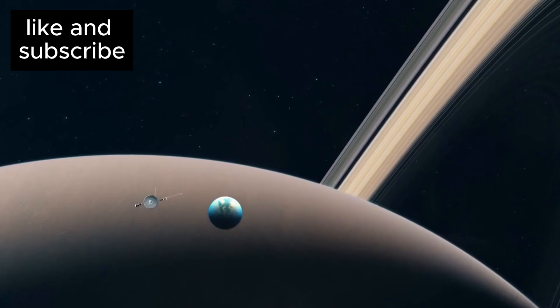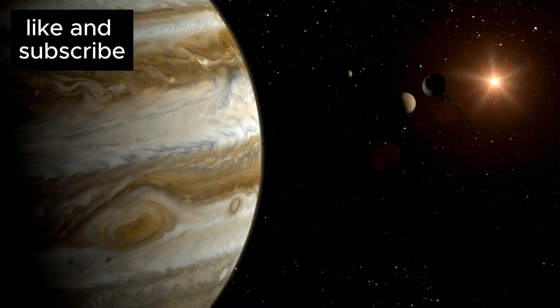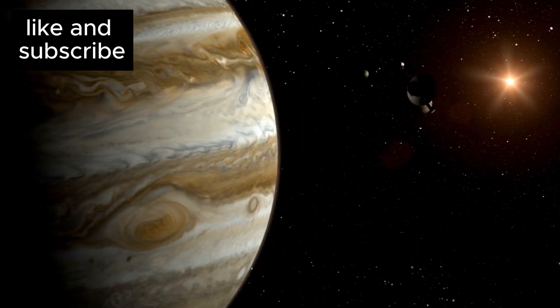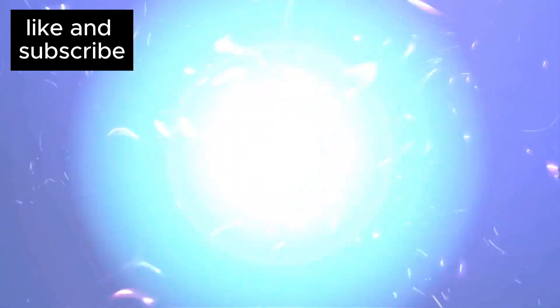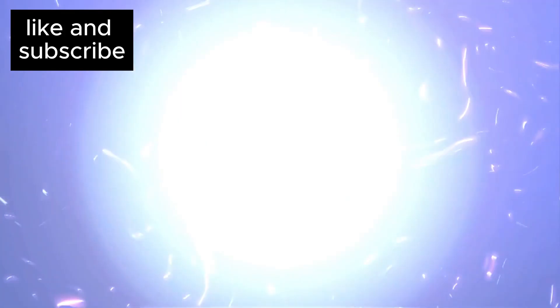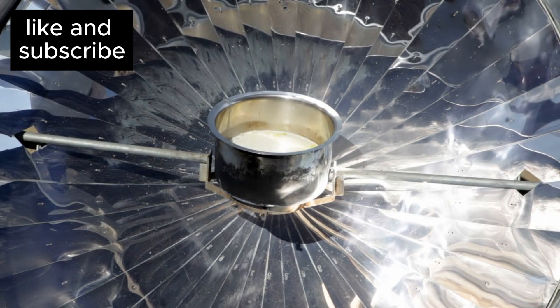However, this achievement did not come easily. As Voyager 1 traveled further and further from the Sun, the spacecraft faced significant challenges. One of the biggest obstacles was the reduced amount of sunlight available to power its instruments. The farther Voyager moved from the Sun, the less energy it received, which placed strain on the spacecraft's power systems.